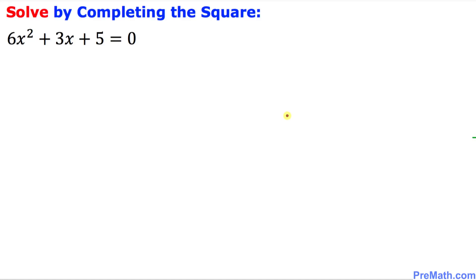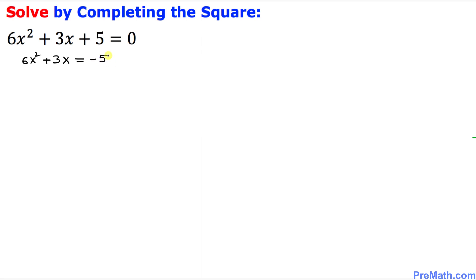Welcome to pre-math. In this video tutorial we are going to solve a given quadratic equation by completing the square. The very first thing we want to make sure is that we have only x variables on the left hand side. That means this constant 5 must go on the right hand side, so we can write this as 6x squared plus 3x equals negative 5.